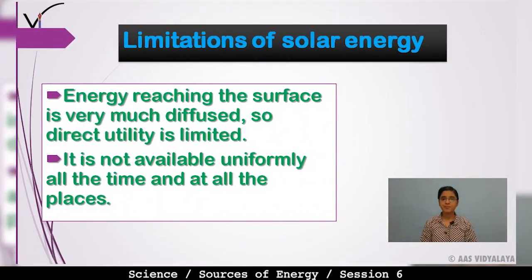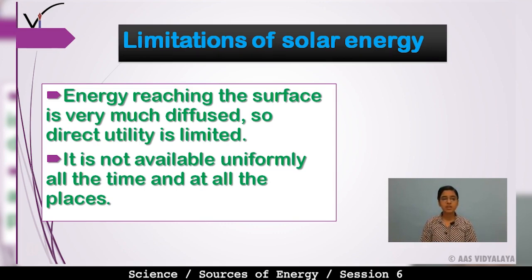The limitations of solar energy are: first, the energy reaching the surface is much diffused, so direct utility is limited; second, it is not available uniformly at all times and all places — in cloudy seasons, hilly areas with less sunlight, and at night, solar panels cannot be used. We can only use solar panels when an appropriate amount of sunlight is available.